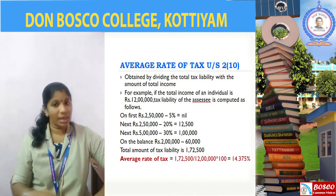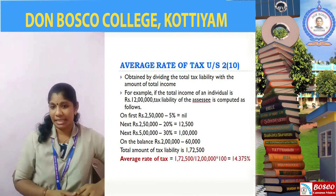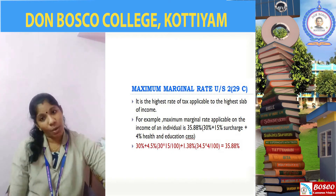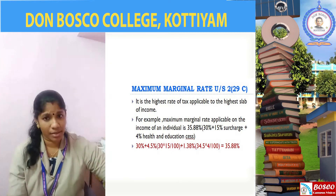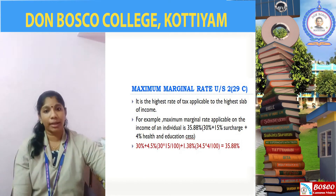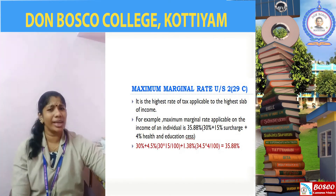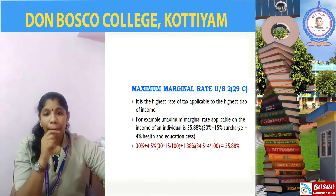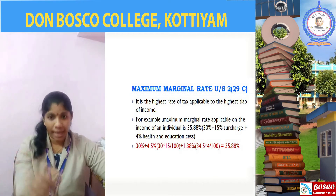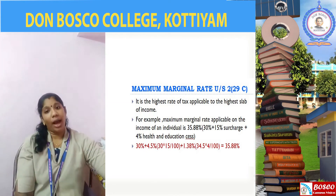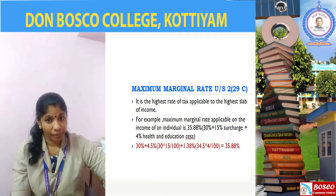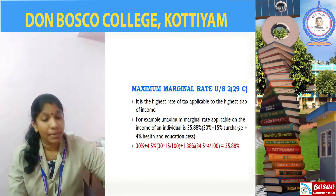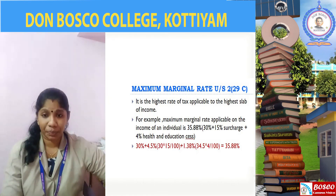So that is the term average rate of tax defined under Section 2 subsection 10 of the Income Tax Act 1961. The next term is maximum marginal rate, which is defined under Section 2 subsection 29C of the Income Tax Act 1961. Maximum marginal rate means the highest rate of tax which is applicable to the highest slab of income.